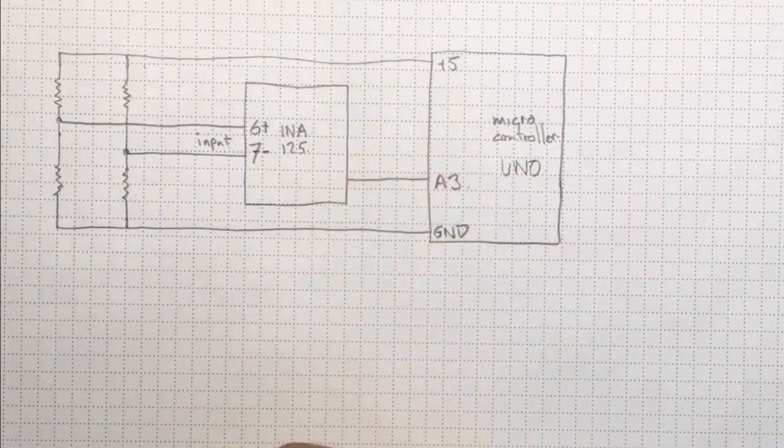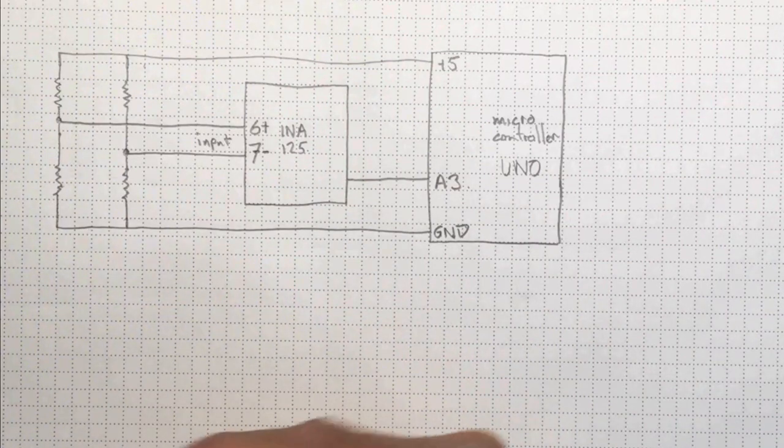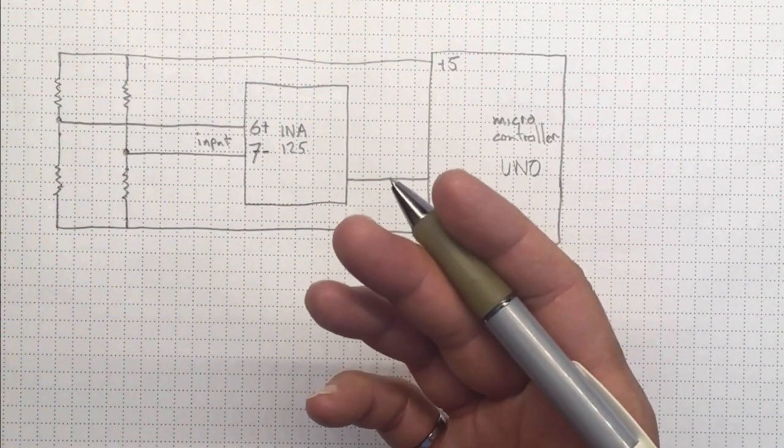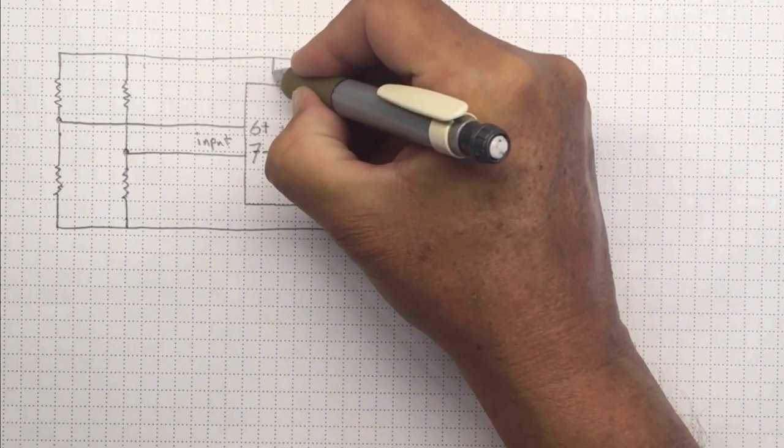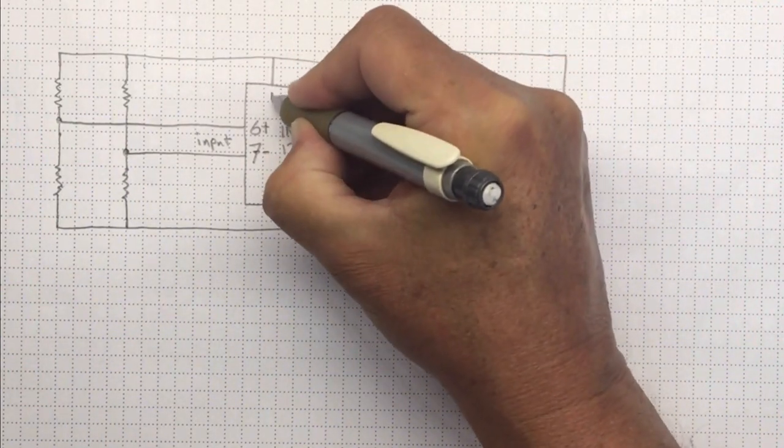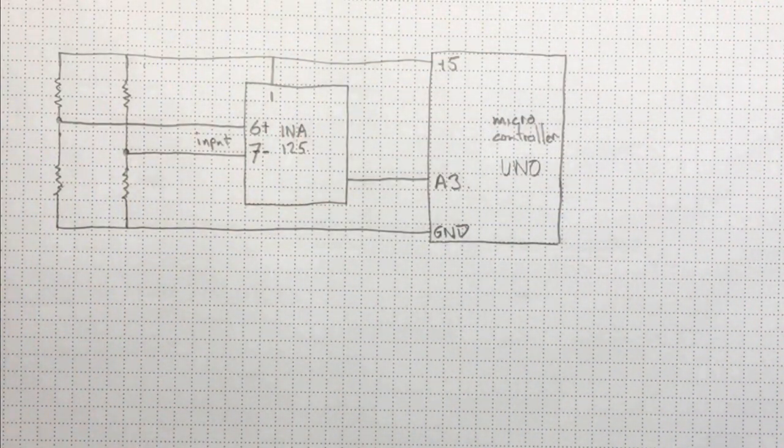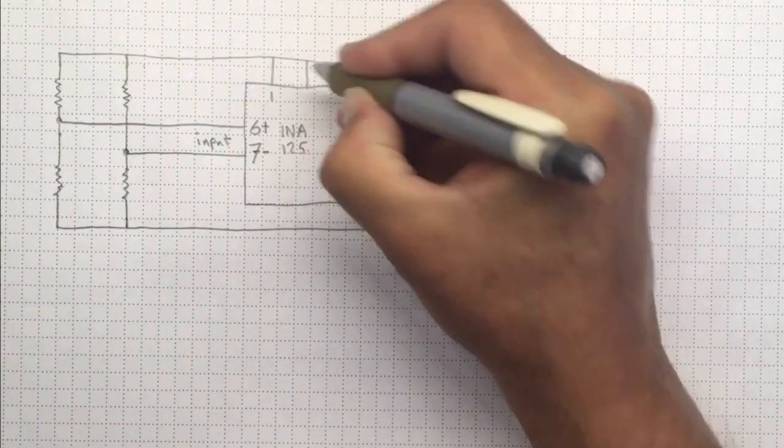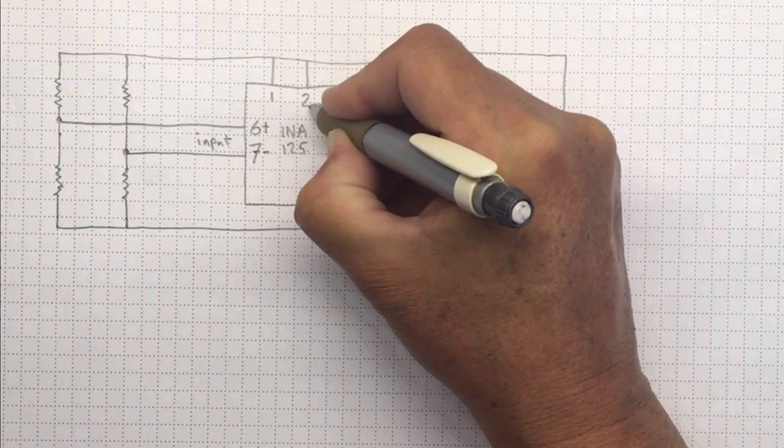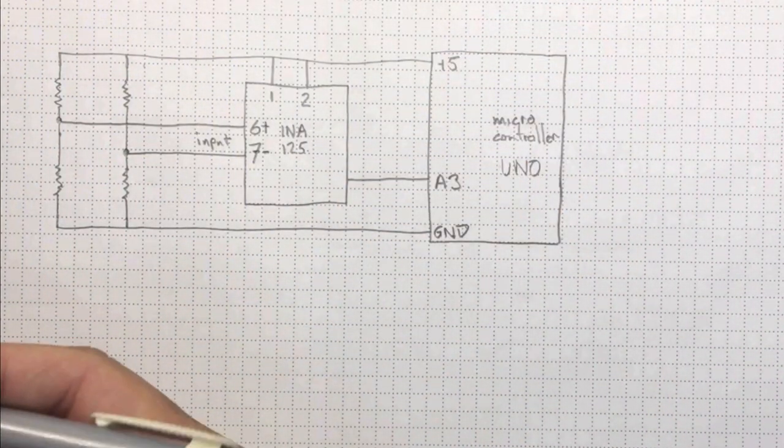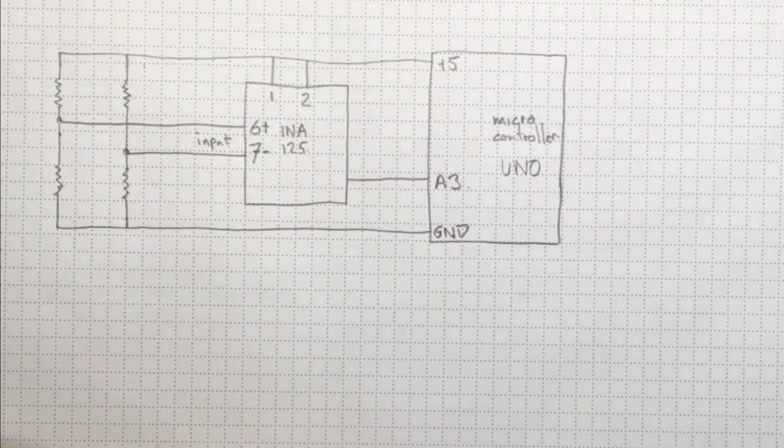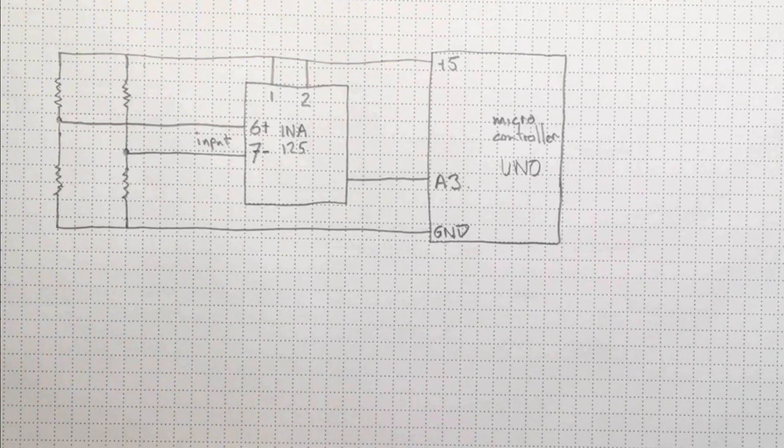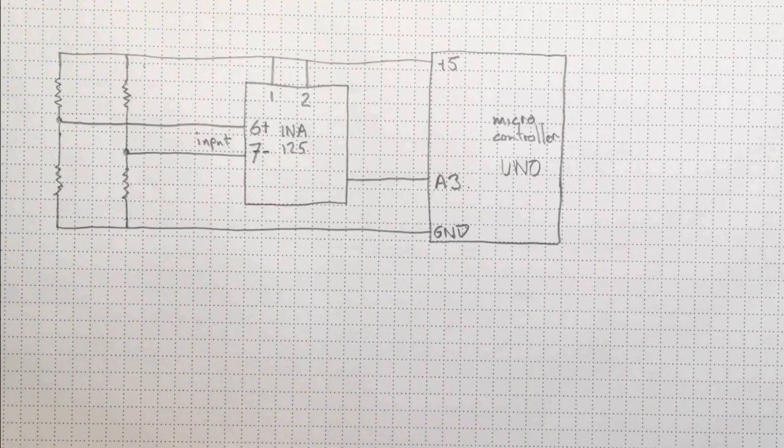Now, in order to make the instrumentation amplifier work, we need to provide it with some power. So we're going to connect that to pin 1, which is the power pin. And we're also going to connect that to pin 2, which is the enable pin on the INA-125. We know all of this stuff about the INA-125 directly from reading its data sheet and copying their circuit approaches.